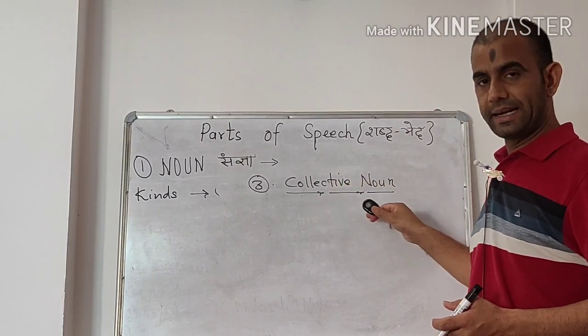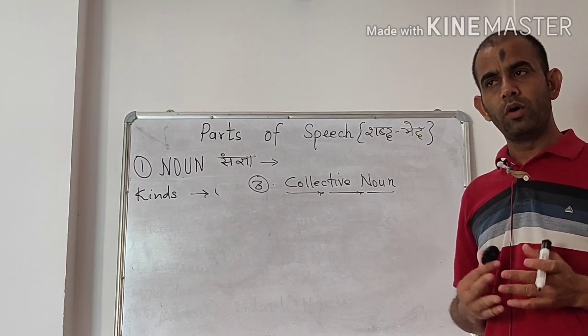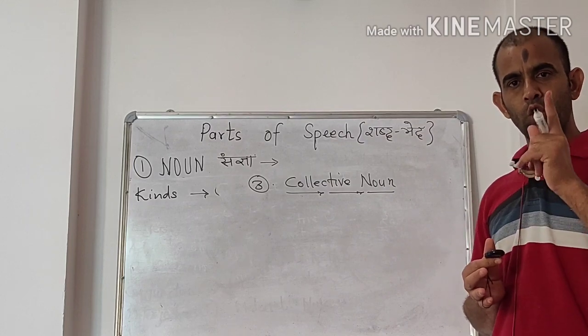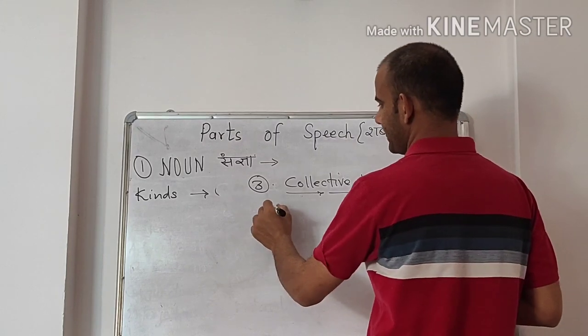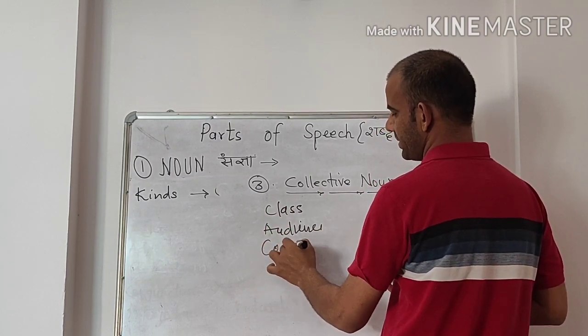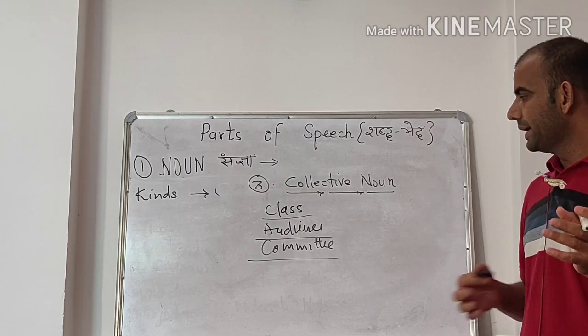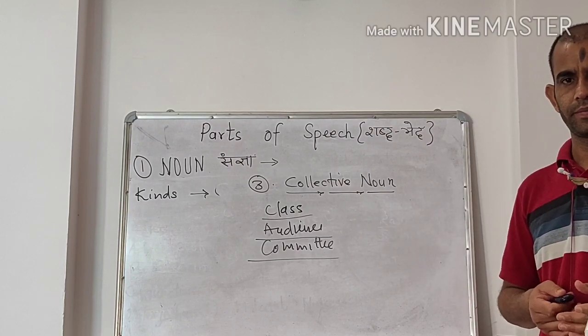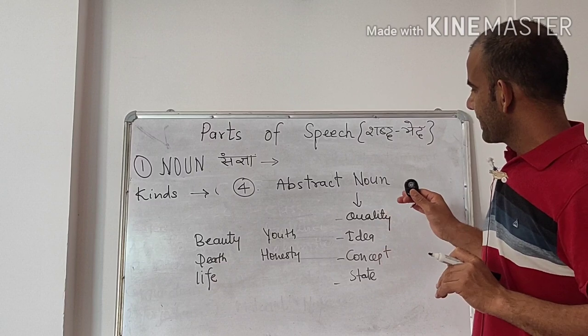What kind of noun is collective noun? What is a collective noun? What is its definition? Its definition is, this is a group of persons or things treated as one.